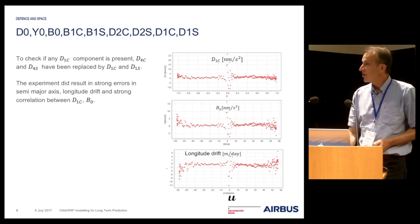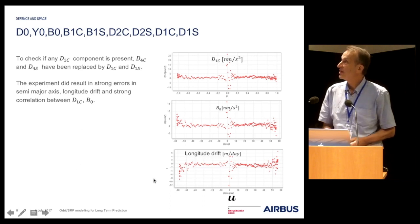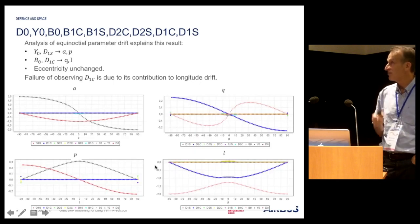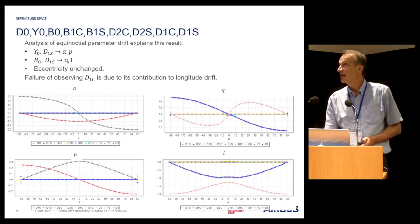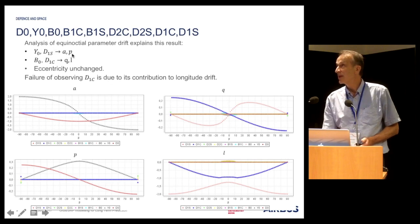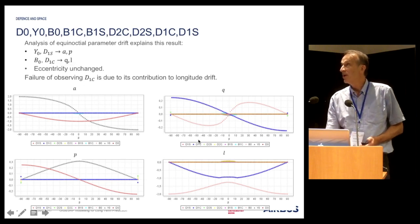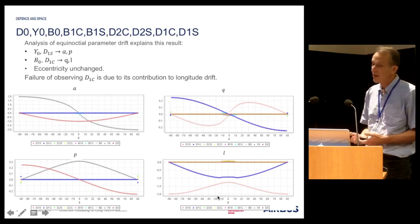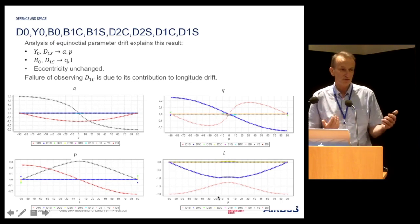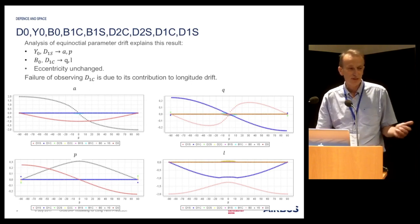We can see the longitude drift going up to 8 meters, which is quite large. In order to understand why, we performed again the equinoctial parameter impact analysis of this ECCOM parameter set. We can see that the D1S coefficient impacts the semi-major axis and P inclination like Y0, while B0 and D1C impact the inclination Q and the longitude drift. By adding a new parameter acting on the longitude drift, we make the longitude drift free in the ECCOM estimation. This causes an exchange between the semi-major axis estimation and the longitude drift. So clearly, we cannot add the D1C coefficient — we cannot observe it.